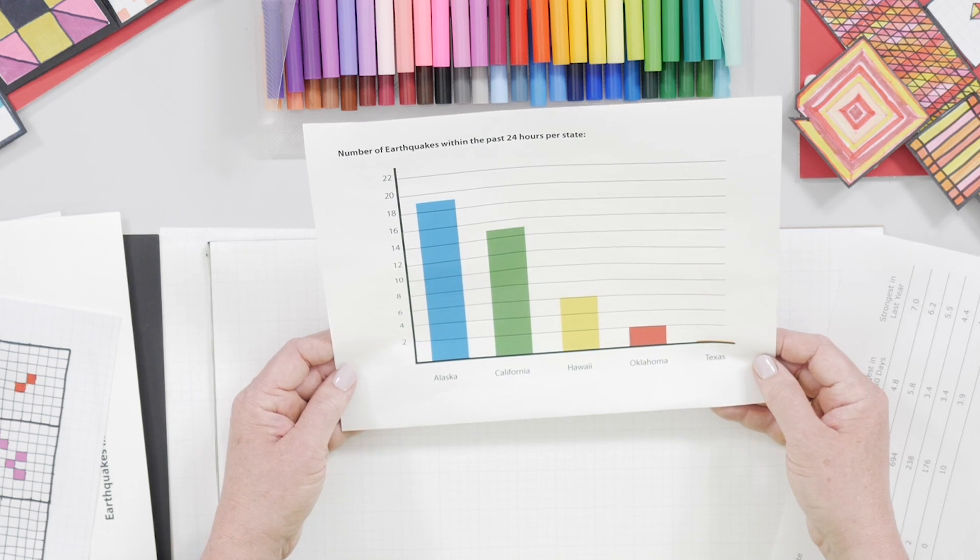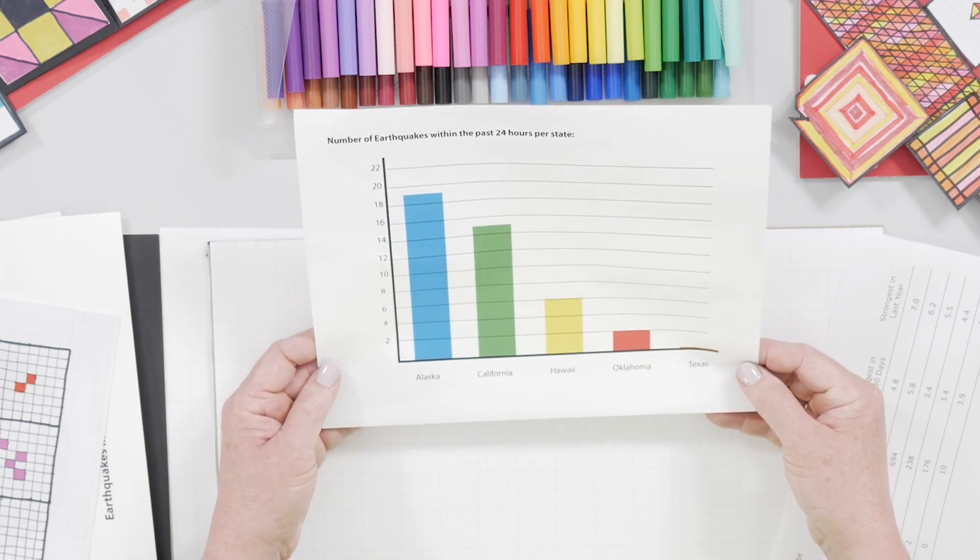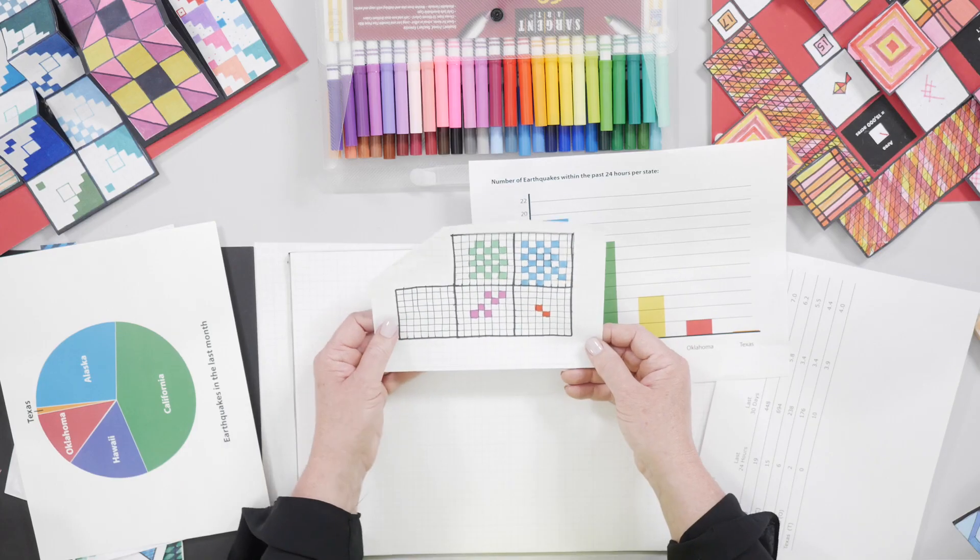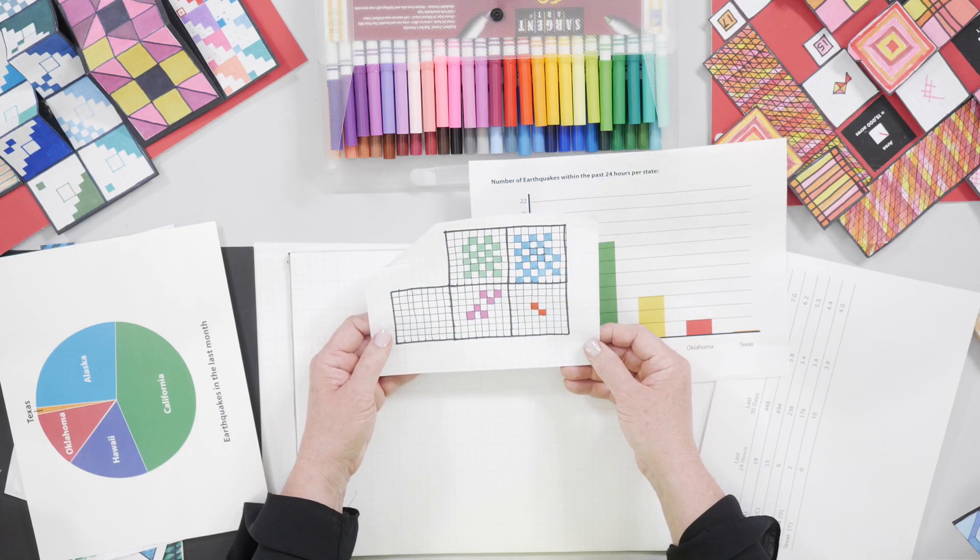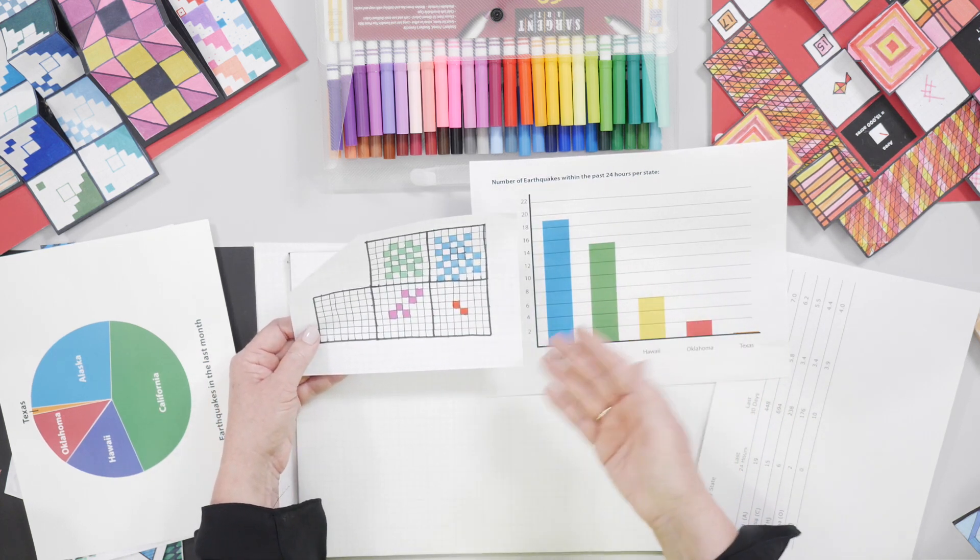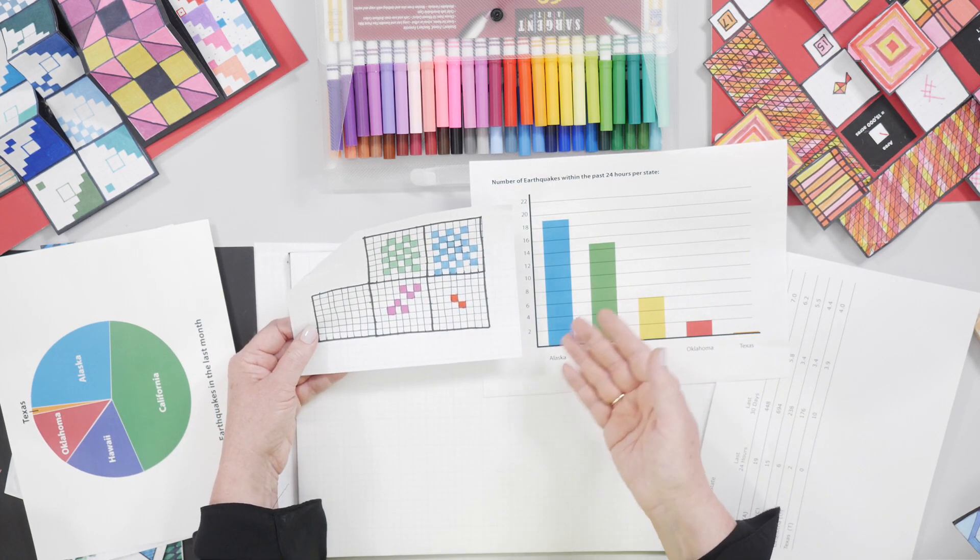Here's something we're very familiar with, expressing numbers in a bar graph. So here's a bar graph that shows you the number of quakes in each state in one day. Here I've taken a piece of gridded paper and colored one square for each earthquake. Now this is the same exact set of data and I've assigned each state a color.